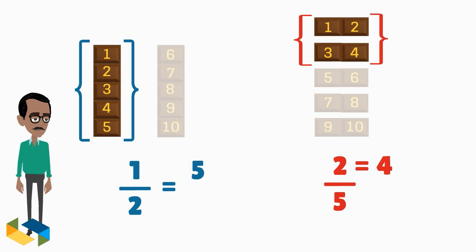So, the fraction 1 upon 2 can be written as 5 upon 10. And the fraction 2 upon 5 is written as 4 upon 10.